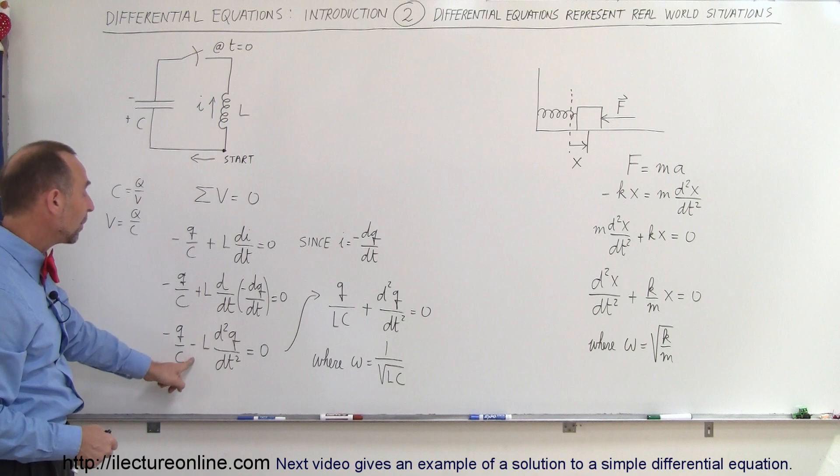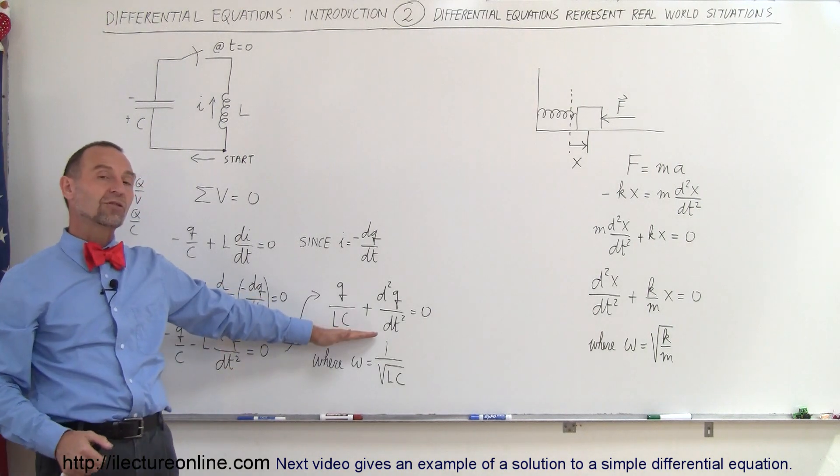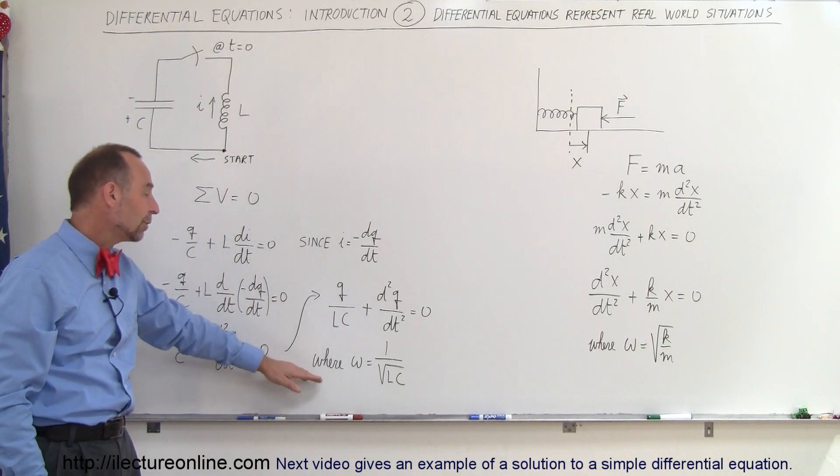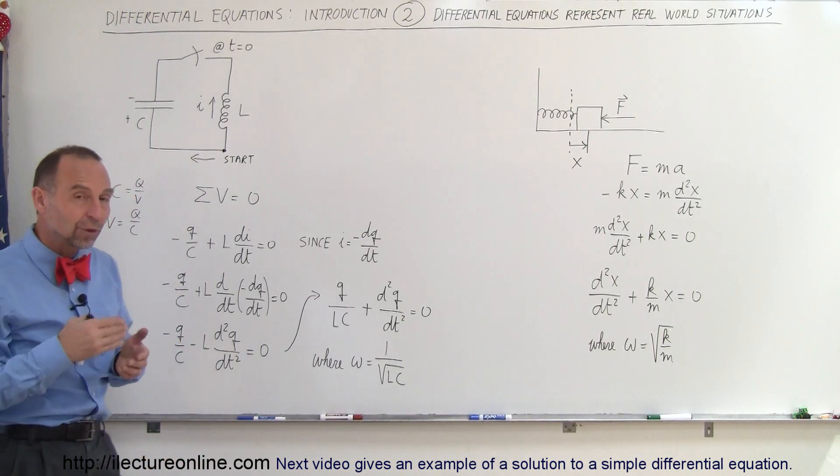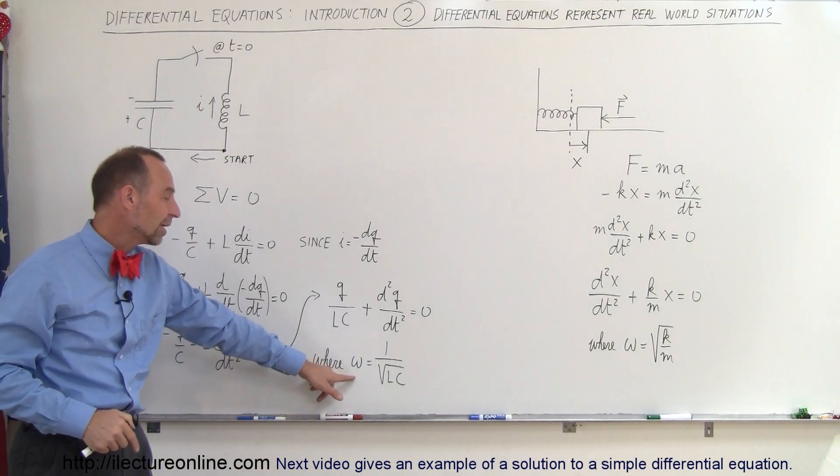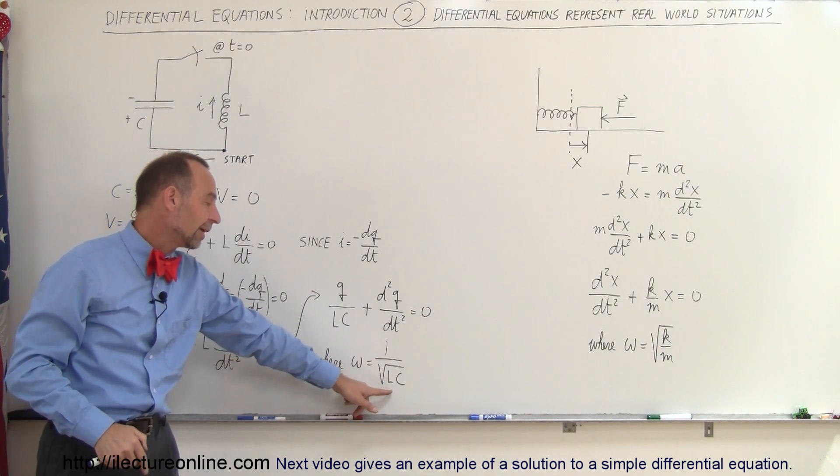If we divide both sides by negative L, the differential equation now looks like that, and we know that the rate at which the charge goes back and forth, which is the oscillating frequency, is equal to one over the square root of L times C.